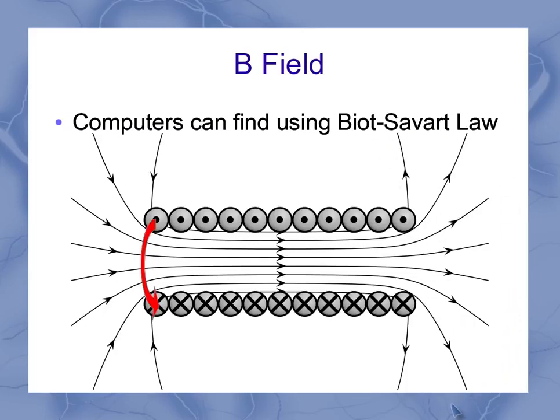Now I want to point out just a few things about what we see from this computer simulation. One, inside the solenoid, the B field is pretty much uniform. The lines are about equally spaced, and they all point in the same direction. And the more ideal your solenoid is, the closer to uniform this is.